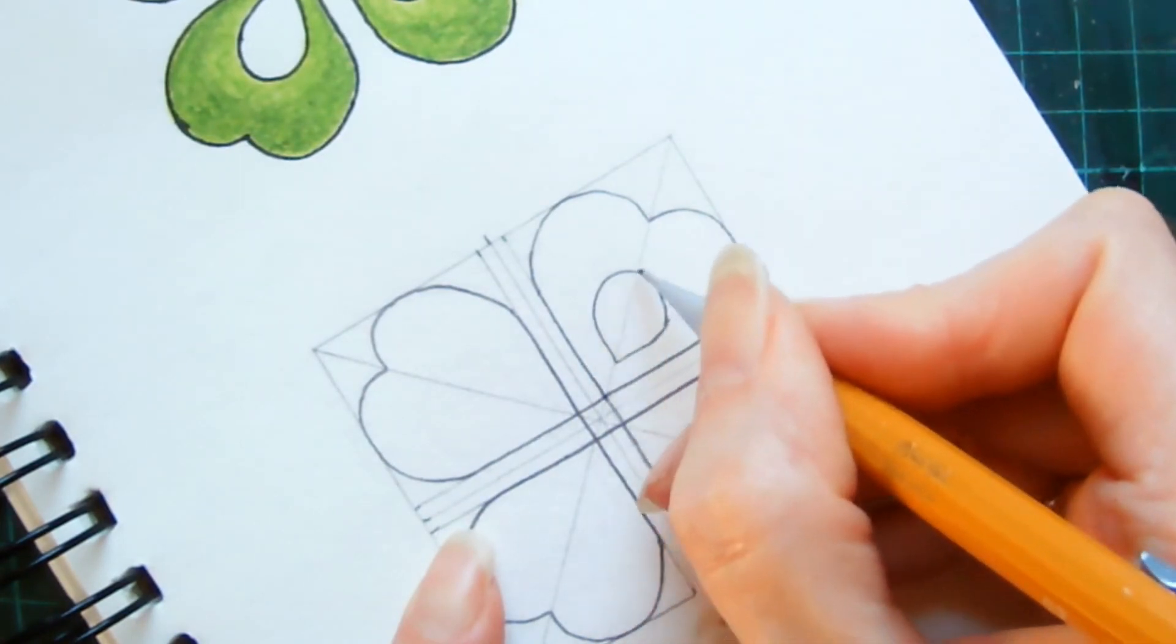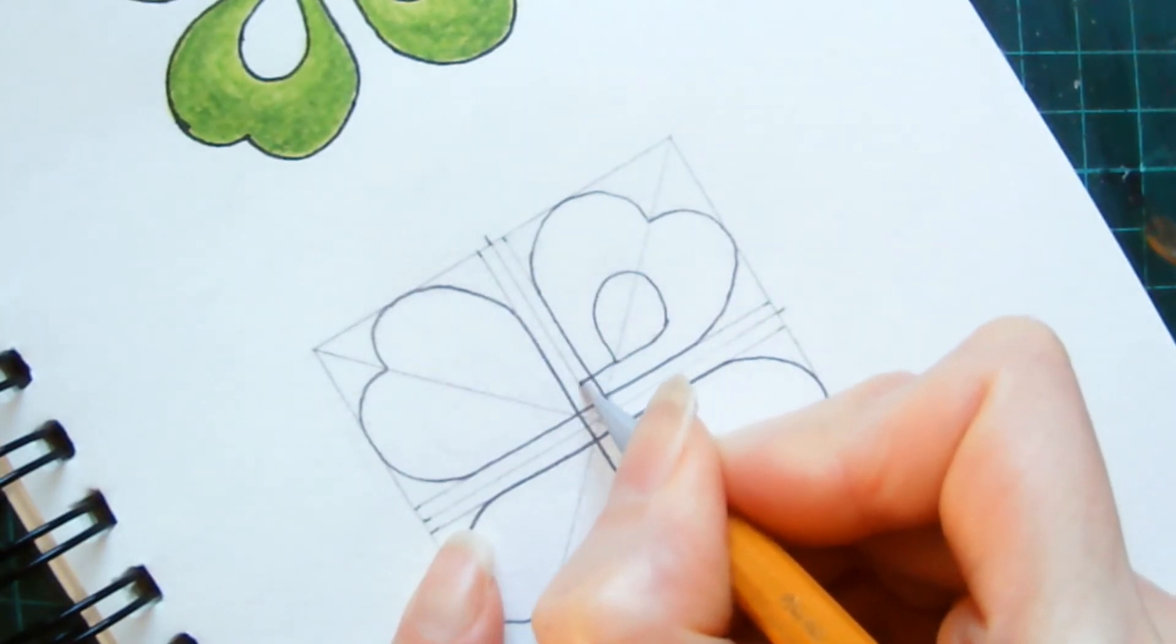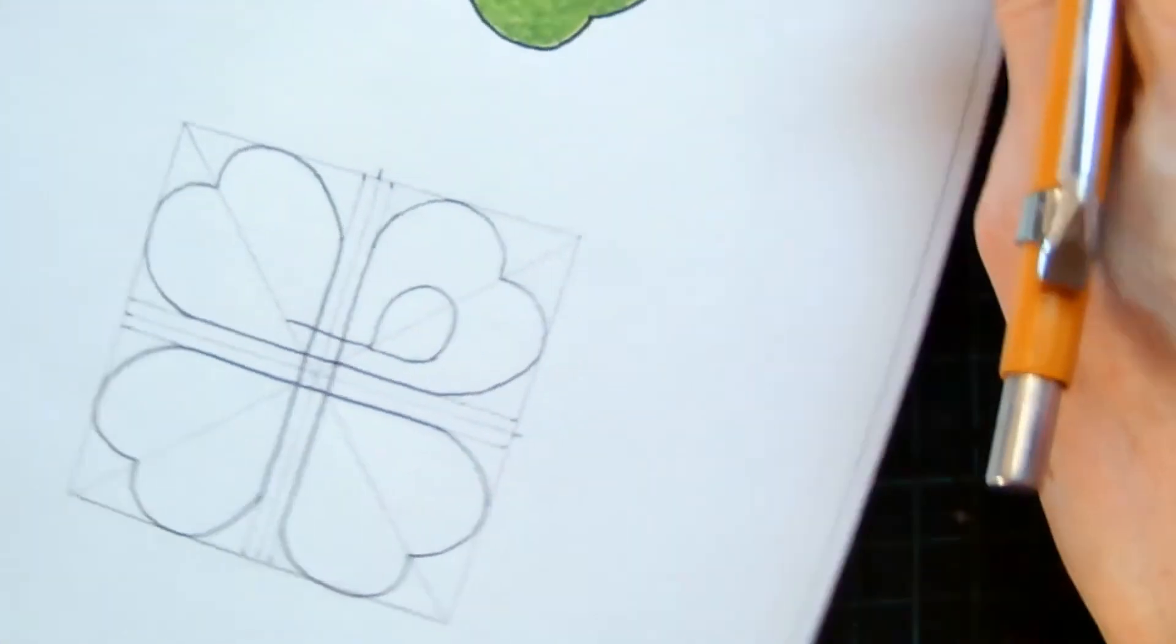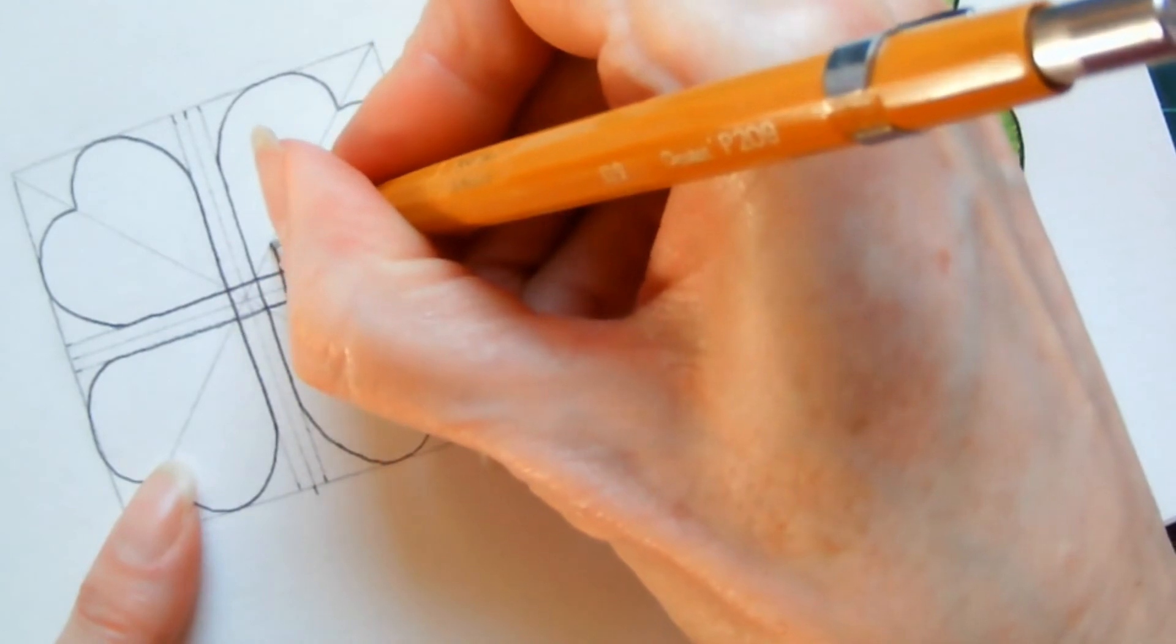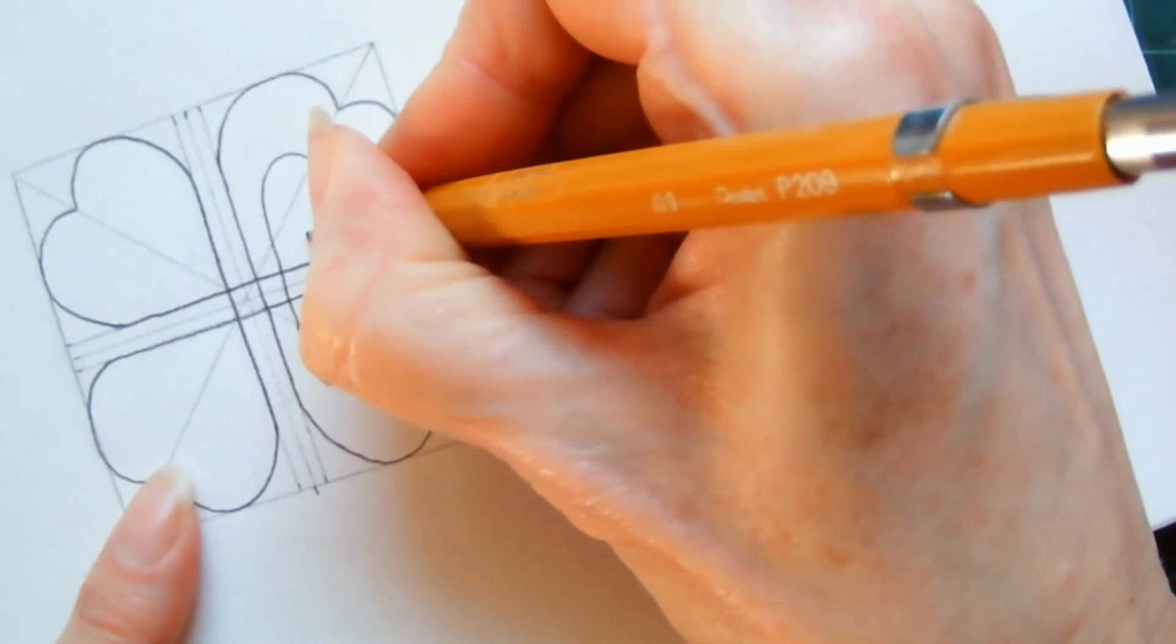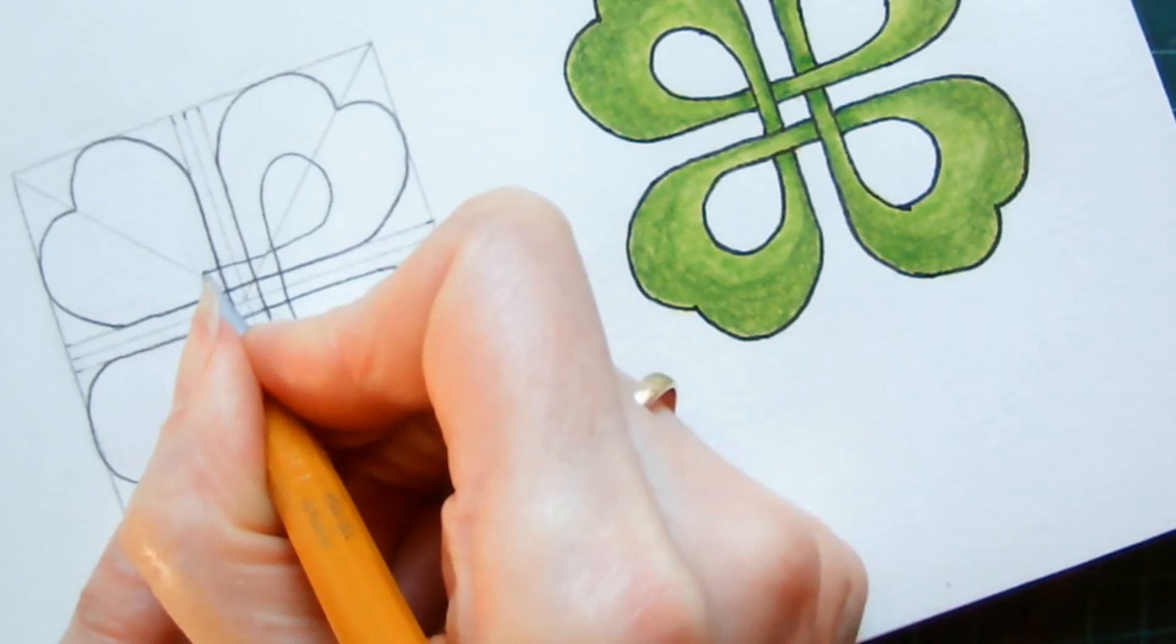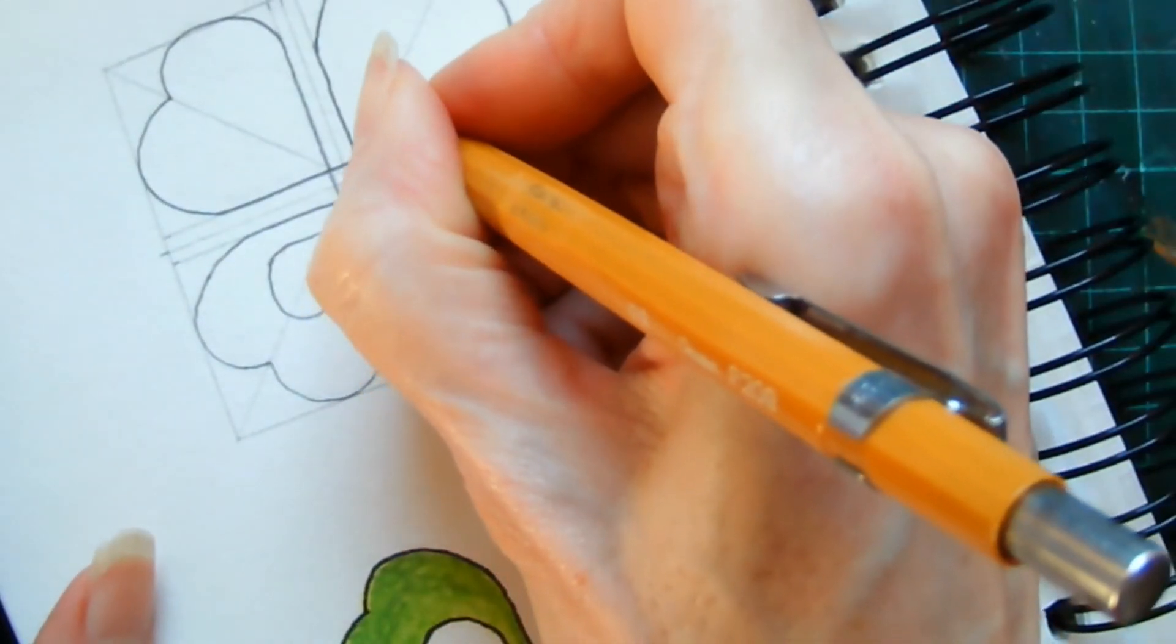And bring it around in the teardrop shape. And then it comes back around and we'll just repeat that all the way around.